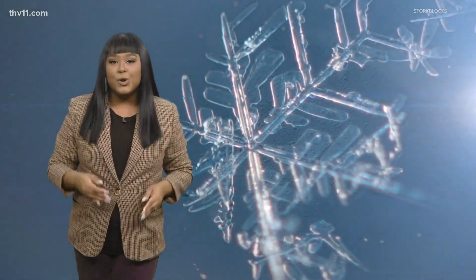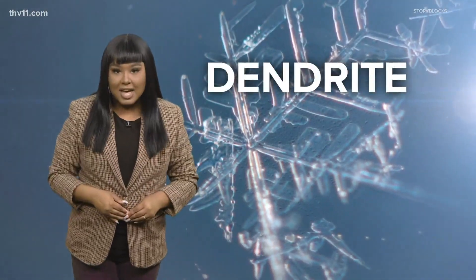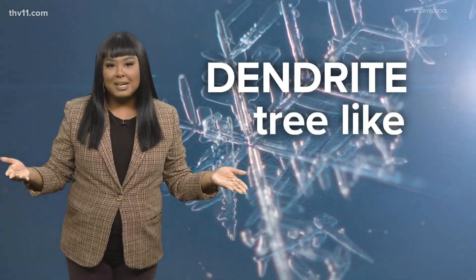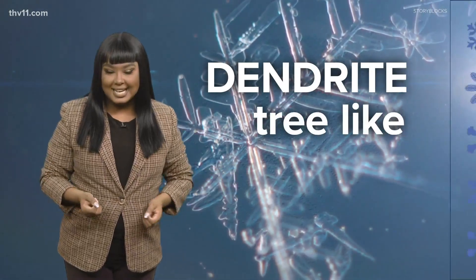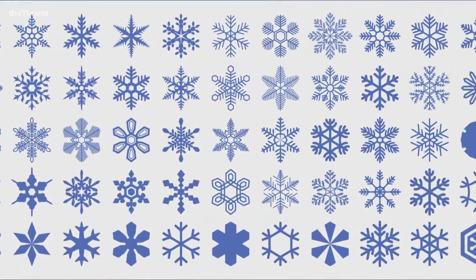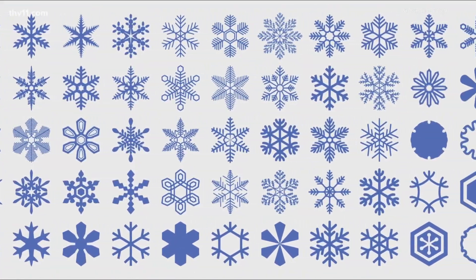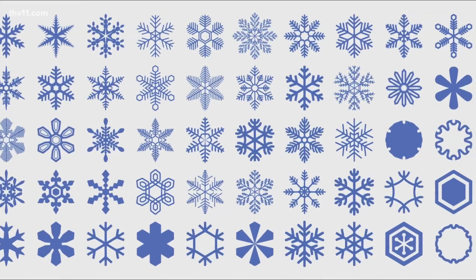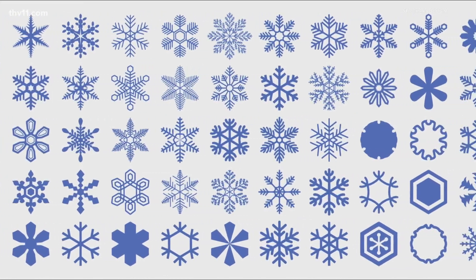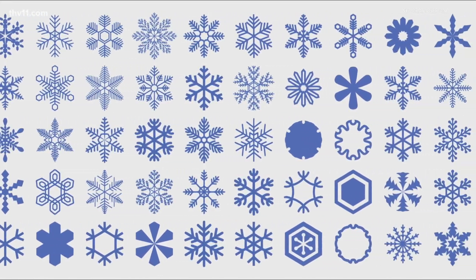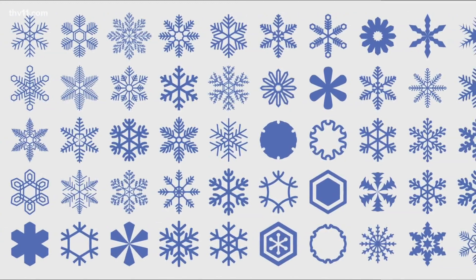Here's your word of the day: that shape is known as dendrite, which means tree-like. But there are as many as 35 different snowflake shapes and combinations, such as plates, columns, needles, or prisms.